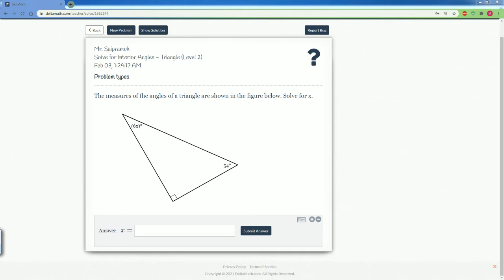Welcome to the Delta Math Solution Tutorial. Here we have solving for the interior angles within a triangle level 2. The question asks, the measure of the angles of a triangle are shown in this figure. You're going to solve for x.